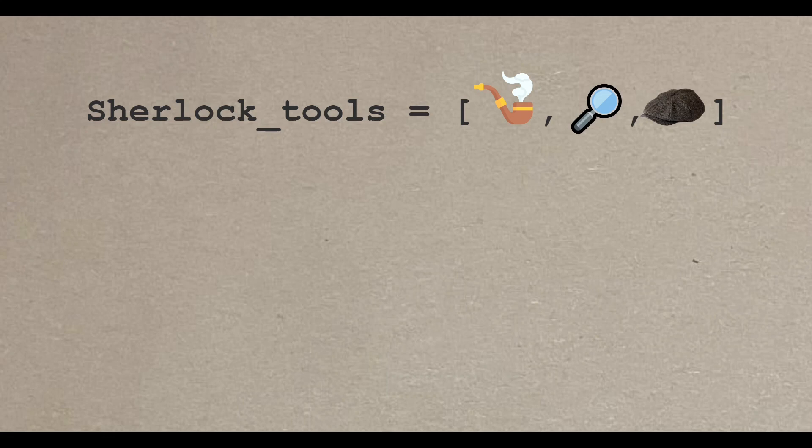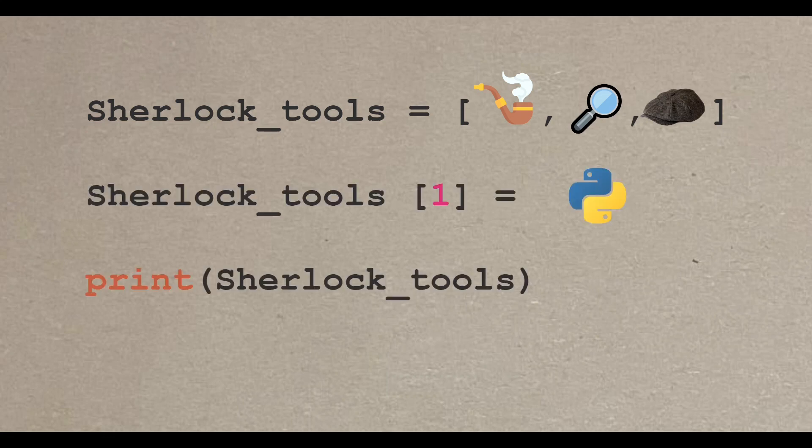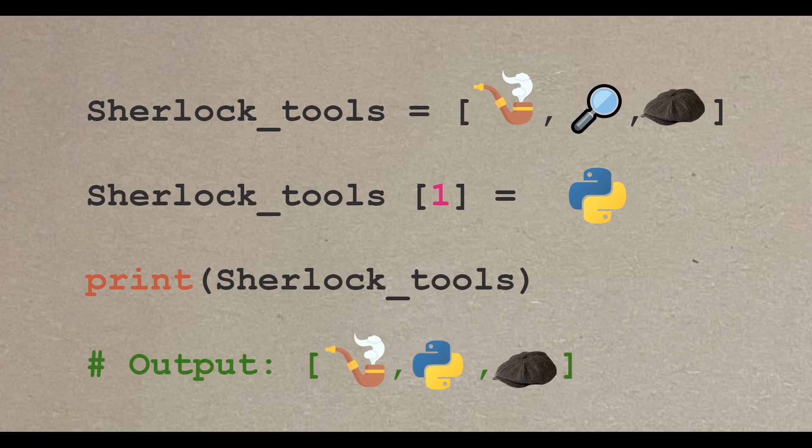Imagine that Sherlock Holmes traded his magnifying glass for a Python code and became a data scientist. Join me in this visual guide as we explore the intersection of solving a crime with probability using Bayes' theorem.